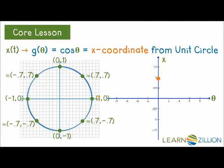Then we have 1.57 for the angle paired with the x coordinate 0. We have 2 and 4 tenths paired with negative 7 tenths, the x value. Pi comma negative 1, 3.9 comma negative 0.7, 4.71 comma 0, 5.5 comma positive 0.7, and 6.28 comma 1 again.